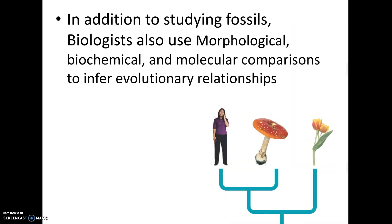So how do scientists determine how closely related organisms are? They use a lot of evidence, which we'll talk about in our next chapter on evolution. One of the ways is morphology — we can literally look at what organisms look like, what characteristics they share: do they have eyes, do they walk on two legs, stuff like that.